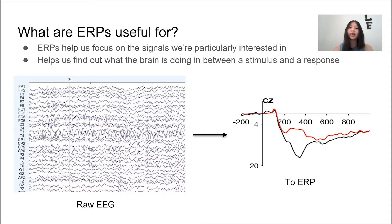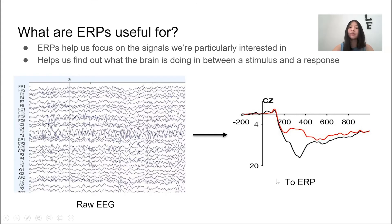ERPs are great for measuring the cognitive activity that is assumed to be related to the event presented. Through ERPs, we can find out what the brain is doing in between the stimulus and response. Here I'm showing you an example of what the raw EEG recording looks like and then what the ERP looks like extracted from the raw EEG. From the ERP, we can see the difference in brain activity between groups from the difference between the red and black line.